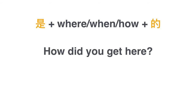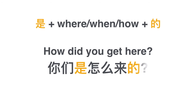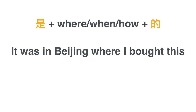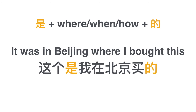Now time for a quick practice. How did you get here? You're literally saying 'you guys is by how get here的' — 你们是怎么来的. How did you guys get here? 你们是怎么来的. How do you say 'it was in Beijing where I bought this'? You say 'this is I bought in Beijing的' — 这个是我在北京买的. Thanks for watching, see you in the next video.